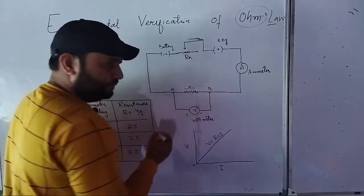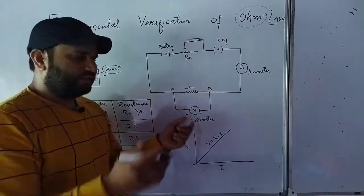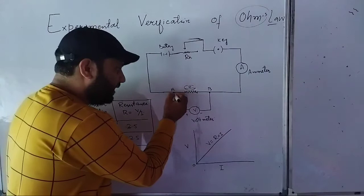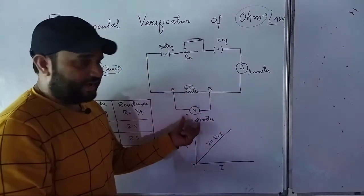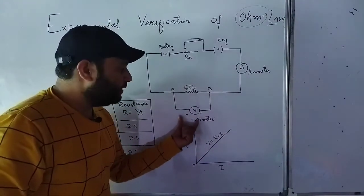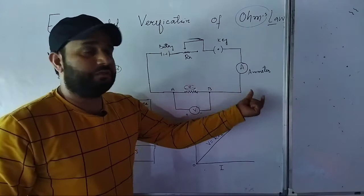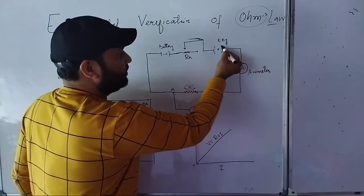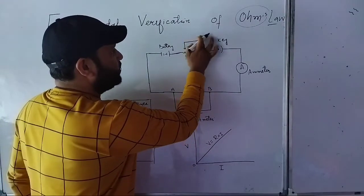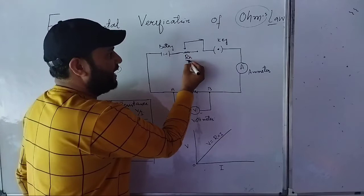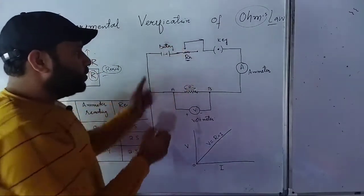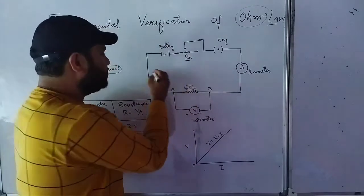First, take a resistor AB - a wire having resistance R. Connect this resistor with a voltmeter; the voltmeter will measure the potential difference. Connect it also with an ammeter; the ammeter will measure the current. Then connect with a key - when the key is closed, the circuit is complete. There is also a variable resistor called a rheostat RH, and a battery which provides the potential difference.